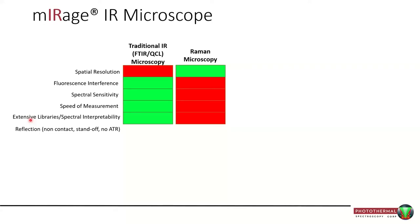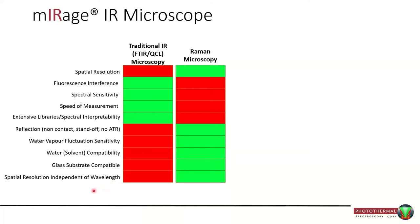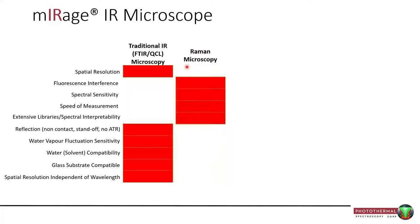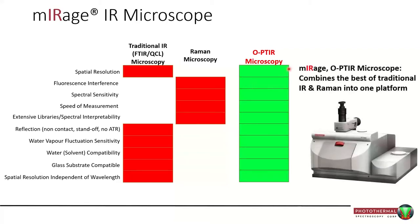For reflection mode, non-contact standoff operation, Raman is the preferred mode — IR isn't great for that. Water vapor can be a big issue in IR, not in Raman. Water and solvent compatibility for live cells is typically an issue with traditional IR but not so much with Raman. It's no surprise that most labs have two instruments — an infrared and a Raman. With OPTIR, we take the best of both and combine them into a single platform — almost literally combining the best of traditional IR and Raman.